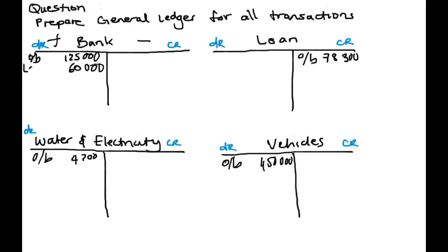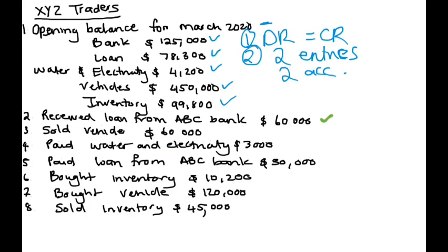So we received $60,000 for a loan. In our bank, we have our bank and our loan account involved. We received money, so we naturally receive it — that's why it's recorded on the debit side. And then in our loan account, we received money from the bank of $60,000, which we have to pay back. So our liabilities are more — we have more debts, more people we owe. So we will record that as a credit entry.